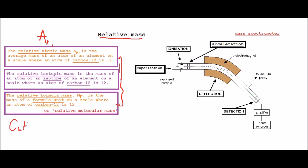And to figure that out, we would do 2 times the AR of carbon, which is 12, plus 6 hydrogen. So the AR of hydrogen is 1, so 1 times 6.